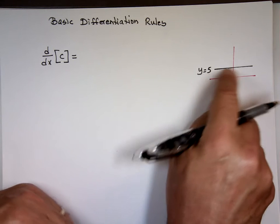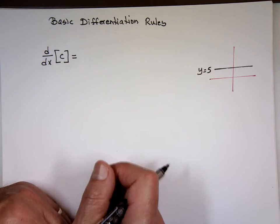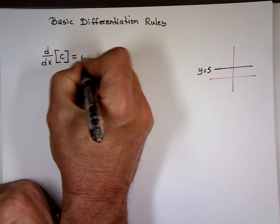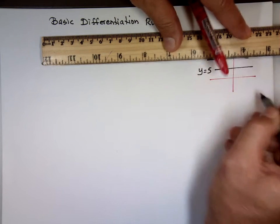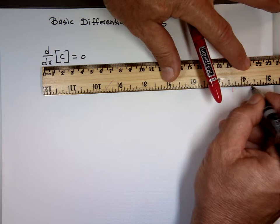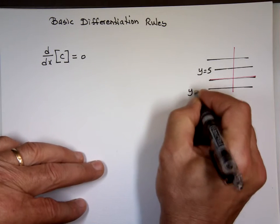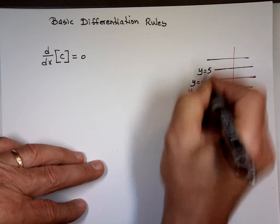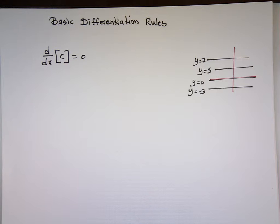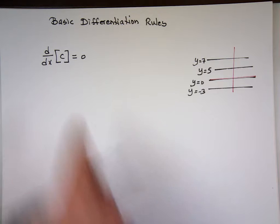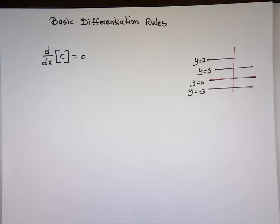The derivative is the slope of that line. What is the slope of that line? Zero. Any constant — Y equals 7, Y equals 0, Y equals minus 3 — the slope of all these lines is always 0. The slope is the rise over the run, and there is no rise. So since the derivative is the slope of these lines, the derivative of any constant is always 0. That's rule number one.